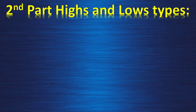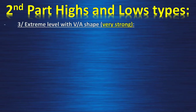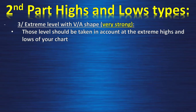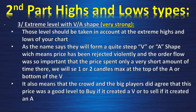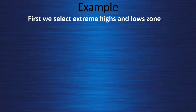The third type in this lesson is the V or capital A shape. They are very, very strong. Those levels should be taken into account as the extreme highs and lows of your chart. As the name says, they form a quite steep V or capital A shape, which means price has been rejected violently and the order flow was so important that price spent only a very short time there — one or two candles max at the top of the A or the bottom of the V. It also means the crowd and big players agreed this was a good level to buy if it created a V, or to sell if it created an A.